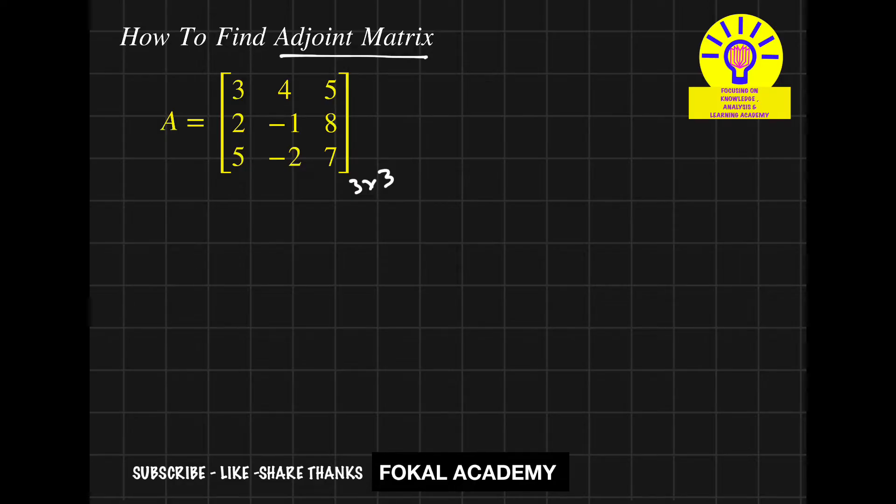So here I am going to introduce one shortcut method for finding the adjoint matrix for the given matrix A. First of all, take the second row. In the second row, the second element is minus 1. Start from here: